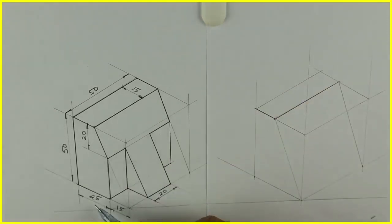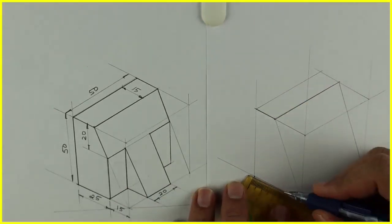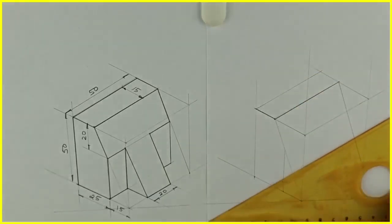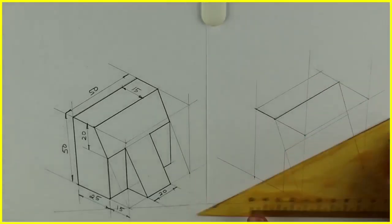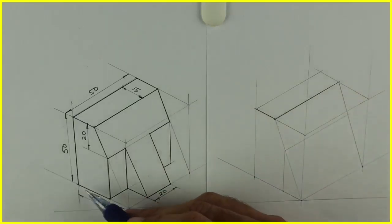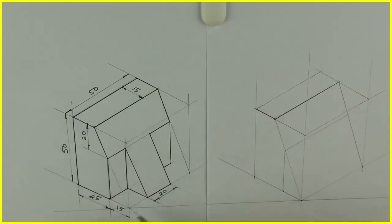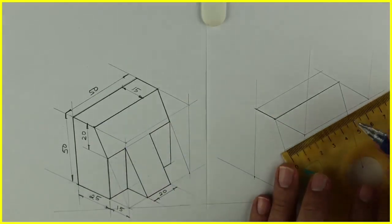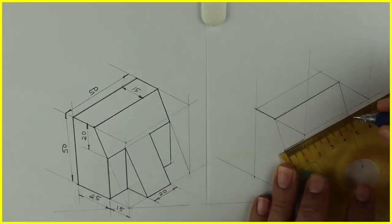Then if you see they have given 25, so you take 25 project upward. Now how much is it? Total is 50 minus 20, see this 50 minus 20 is 30, so 15, 15. So we'll take 15 here.